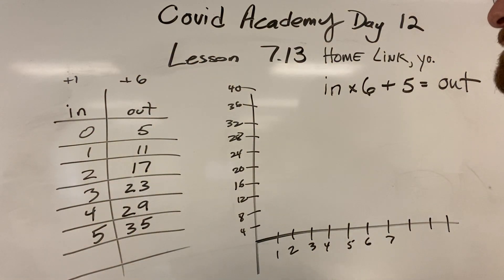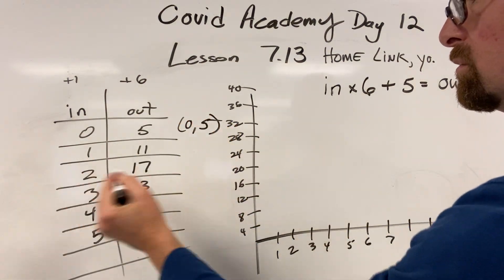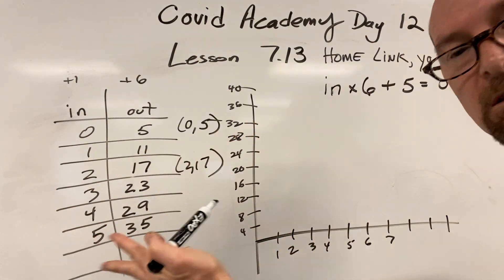Now the ordered pairs. It says 0,5 and 2,17, like this.